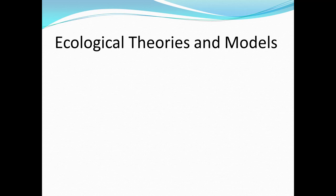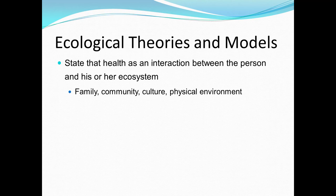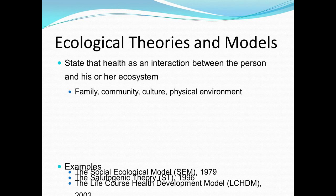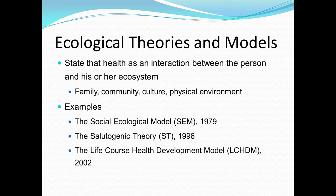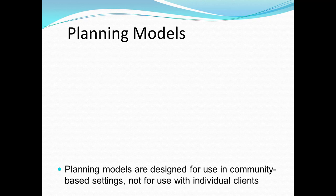Next, we turn our attention to ecological theories and models. These hold that the state of health is an interaction between the person and his or her ecosystem, including families, communities, cultures, and the physical environment. Examples of ecological theories and models include the social ecological model, the salutogenic theory, and the life course health development model.